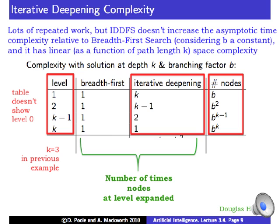If we take a look at the complexity of iterative deepening search, the left-hand column shows levels one, two, through k minus one and k. In our previous example, k was three. This table doesn't show level zero, which doesn't change any of the basic arguments the table is intended to summarize. In iterative deepening search — the third column, which is highlighted — at the deepest level k equals three, we only visited that level once. Level zero, not shown here, we actually visited k plus one times. But at level one, as the table shows, we visited that k — in our example, three — times total. If b is the branching factor, in the previous example b was equal to two, but in general it is much larger for non-trivial searches.